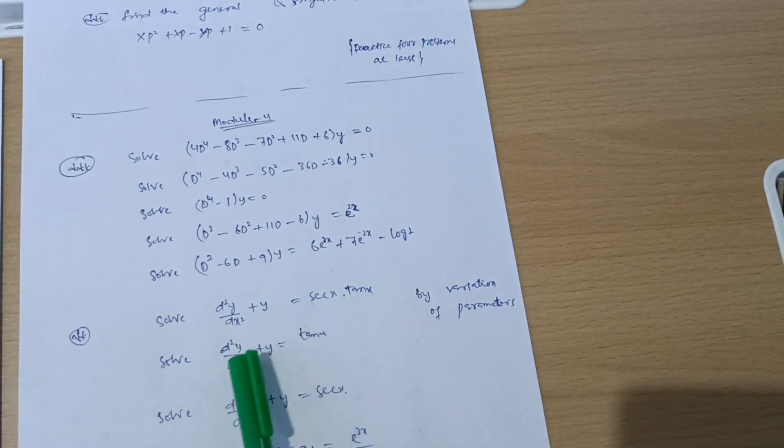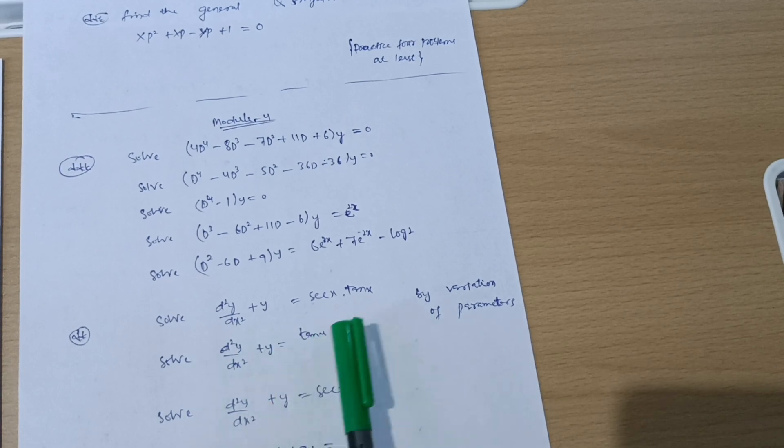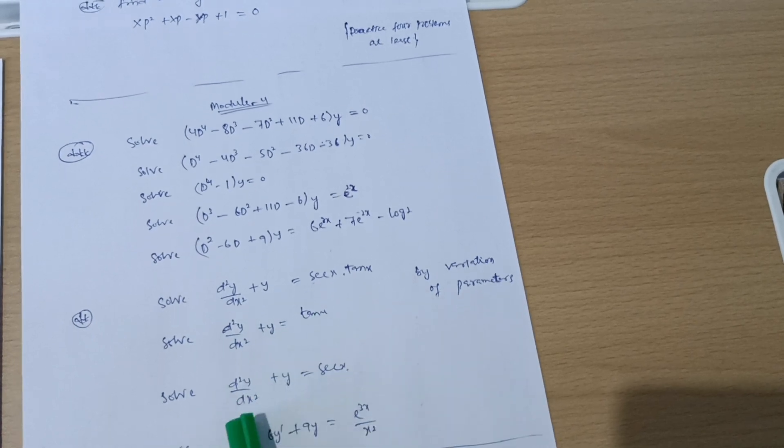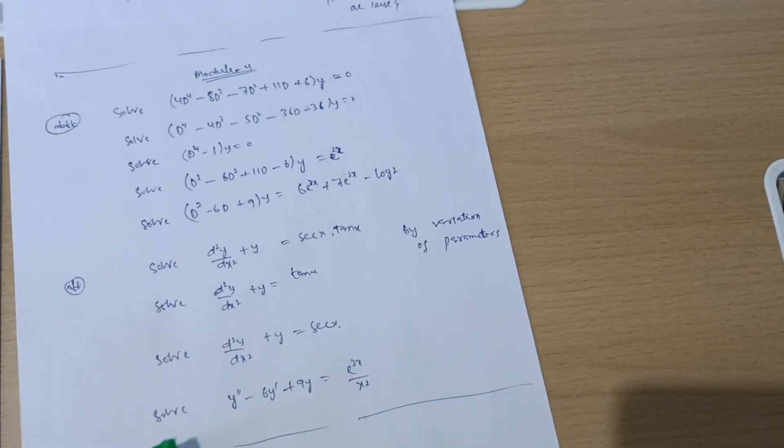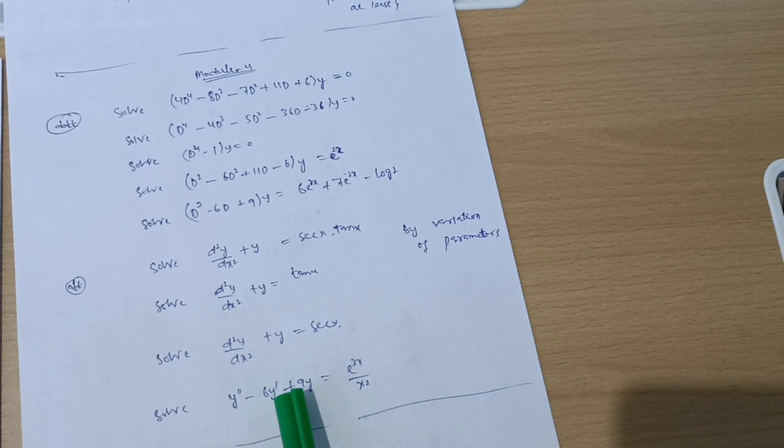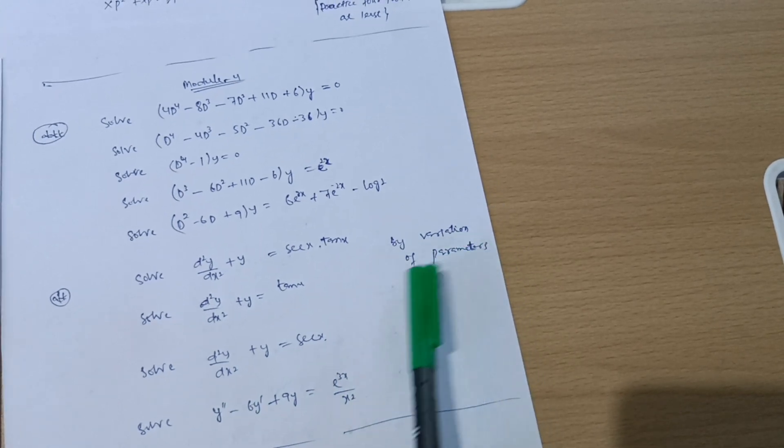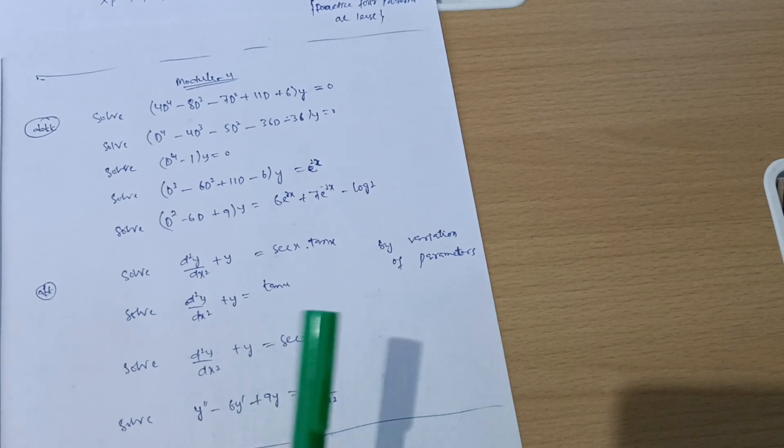Next we have: solve d²y/dx² + y = sec x tan x. Solve d²y/dx² + y = 10x. Solve d²y/dx² + y = sec x. Solve y'' - 6y' + 9y = e^(3x)/x² by variation of parameters. This is a super important question, so go through these four questions by using variation of parameters.